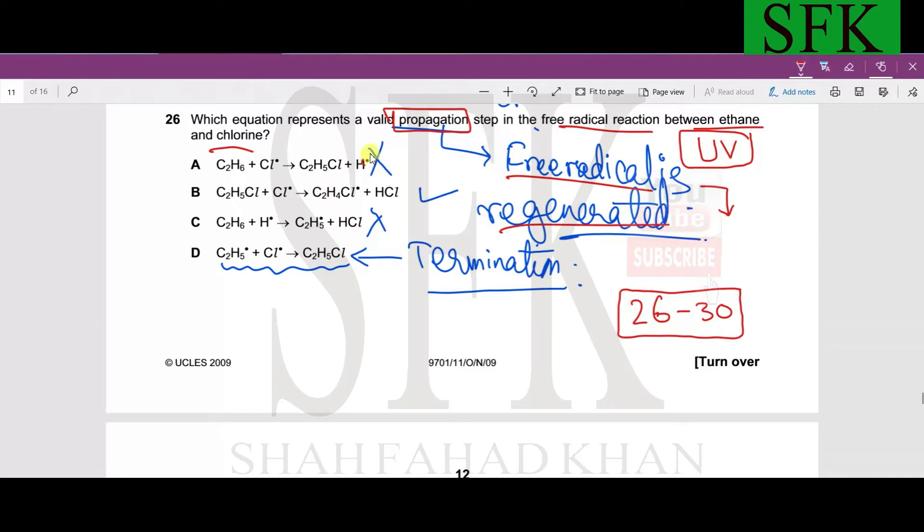If we look at each species, hydrogen radicals are never used in these reactions, they are never generated, so A and C cannot be the correct answers. In B and D, if we look at the products, we have a radical in B but we don't have a radical in D, so D cannot be correct either. B is the correct option.